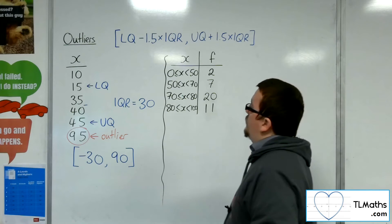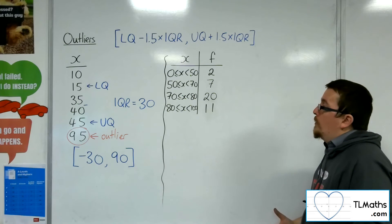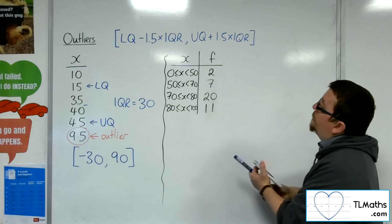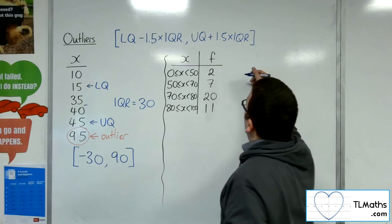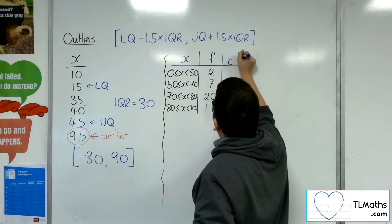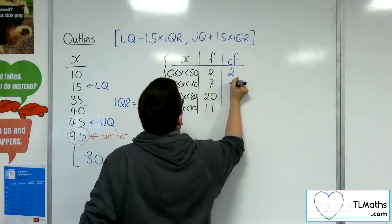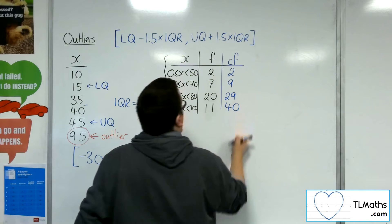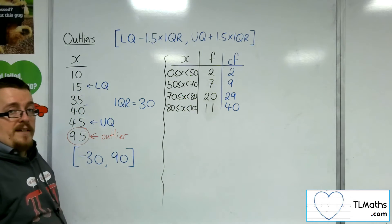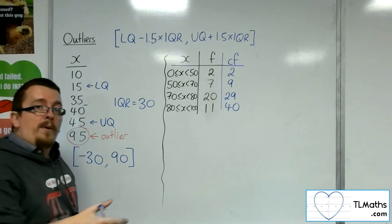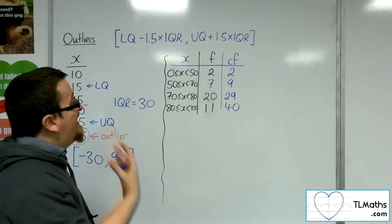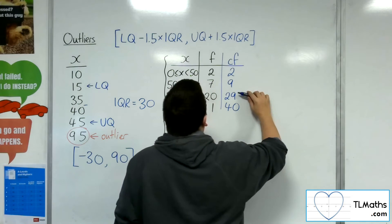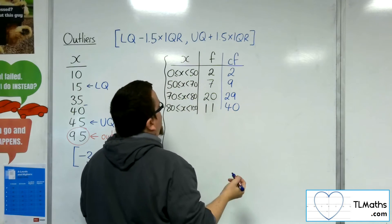Now let's look at the second example. I need to work out the lower quartile and upper quartile using linear interpolation. I'll also work out a cumulative frequency. The cumulative frequencies are 2, 9, 29, 40 — so I've got 40 bits of data. The lower quartile will appear one-quarter of the way along, so at position 10. The 10th value will be in the grouping 70 to 80.